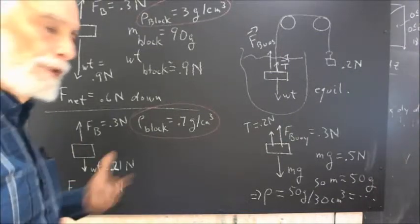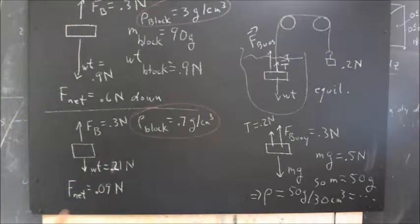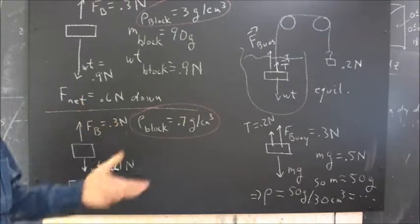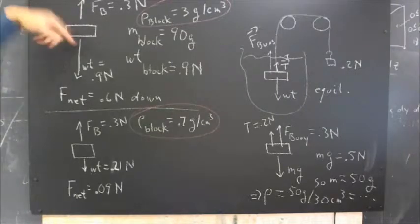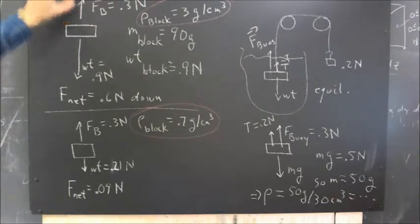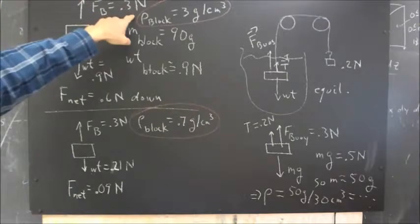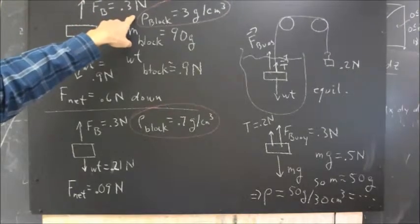Now we have the question of what's the net force on the block, given that the block has some density. To get the net force, we want to draw a free body diagram. We have a buoy force of 0.3 newtons, as we saw in the preceding.